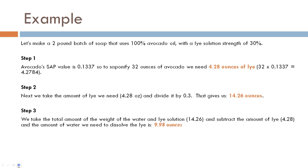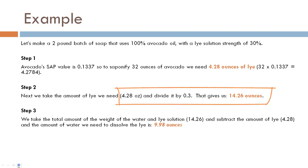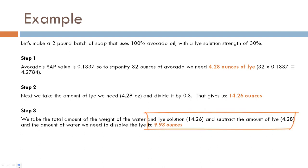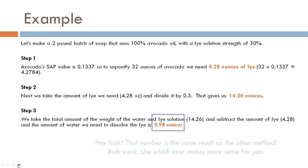Let's go back to the 100% avocado oil soap with a 30% lye solution — the same example as before. We need 4.28 ounces of lye, so: 4.28 ÷ 0.30 = 14.26 ounces total lye-water weight. Then 14.26 − 4.28 = 9.98 ounces of water. That matches what we calculated with option one — both methods work, and when the math checks out, we're always happy.